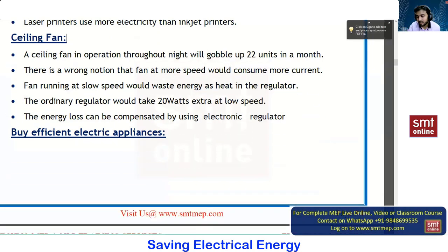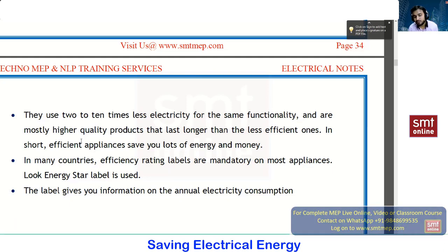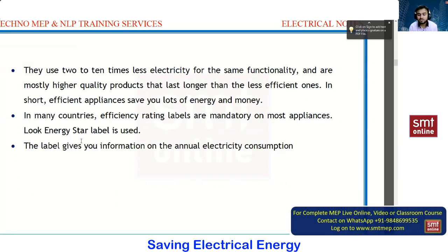To conclude: whatever device you select or design, try to go with a good manufacturing company. The initial investment will be more, but on a long run it will be much more efficient. In many countries, efficiency rating levels are mandatory — even transformers now carry star labels. Good manufacturing companies like Toshiba, Bell, and ABB provide energy labels for their devices, including transformers, and these labels provide annual electricity consumption information.